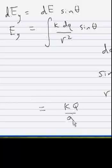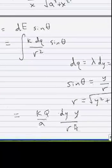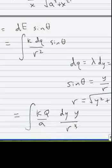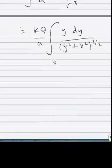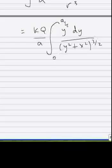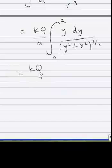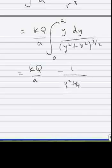k q over a, dy, y over r cubed. Of course, we have an integral here. I'm going to bring my constants out in front. And the integral is from 0 to a. This integral is also in the back of the book. It's a little more complicated than the previous one. We end up with our constants. And then this integral becomes negative 1 over y squared plus x squared square root, evaluated from 0 to a.